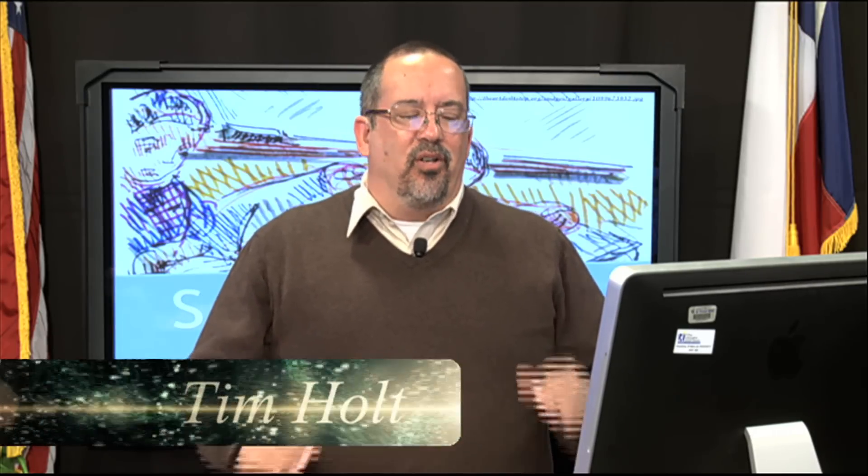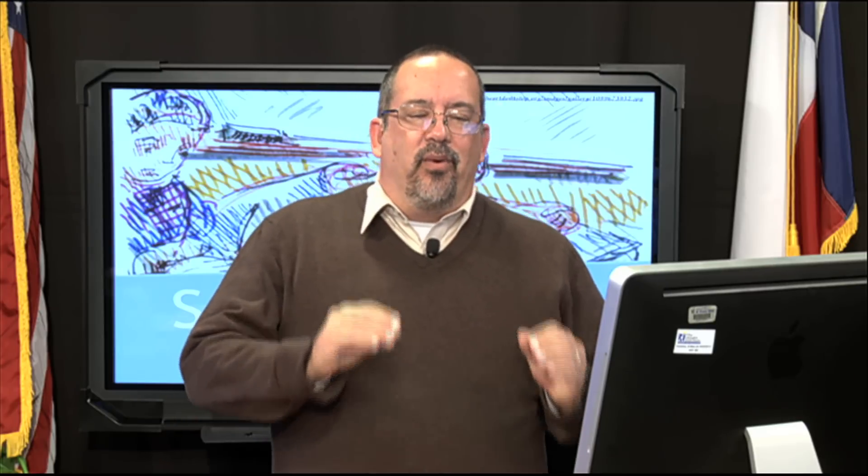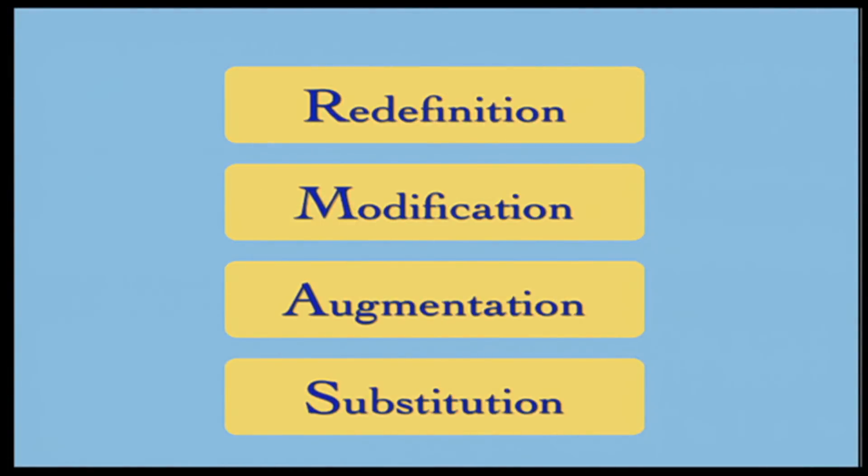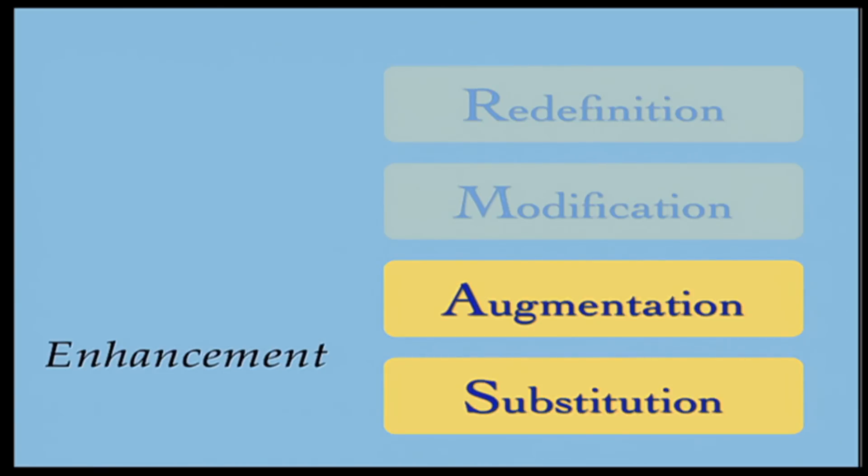For several of these episodes, we're going to look at every single one: What does the S mean, the A, M, and R? We've already covered an overview of the SAMR model and talked about S, which is substitution. We still have augmentation, modification, and redefinition to go through. We're going to talk today about what augmentation is.